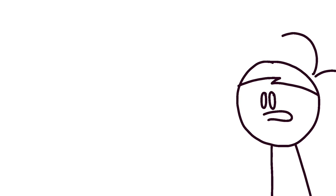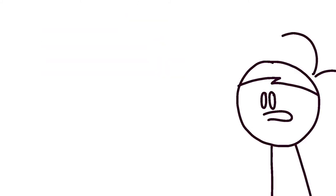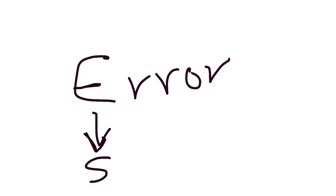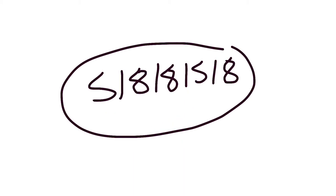Now, here's the problem: error is not a number, it's a word. But I'm going to convert it into a number. So we're going to take the word ERROR. As you know, E is the fifth letter of the alphabet, R is the 18th — I wouldn't be surprised if you didn't know that, I didn't know that either — and O is the 15th. Now we have a number we can use.